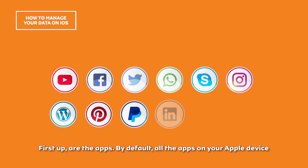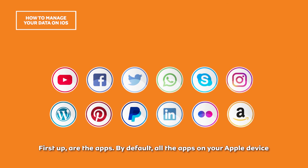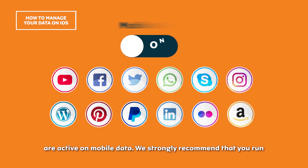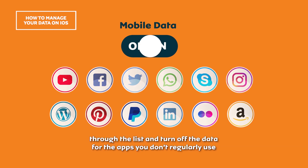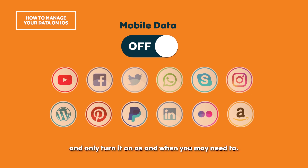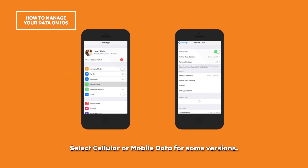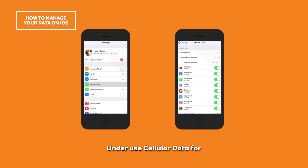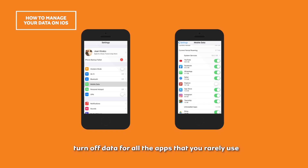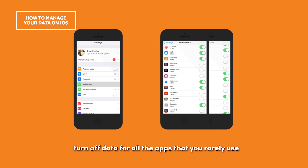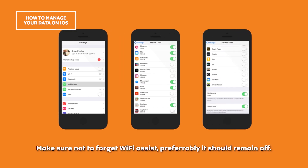First up are the apps. By default, all the apps on your Apple device are active on mobile data. We strongly recommend that you run through the list and turn off the data for the apps you don't regularly use, and only turn it on as and when you may need to. Simply go to Settings, select Cellular or Mobile Data, and under 'Use Cellular Data for', turn off data for all the apps you don't really use. Make sure not to forget Wi-Fi Assist — preferably it should remain off.